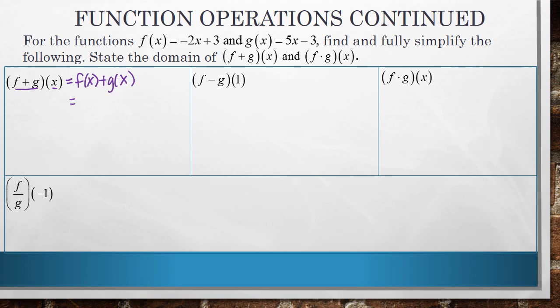So we'll write out our f of x function, which is negative 2x plus 3, and then we'll add our g of x function, which is 5x minus 3.